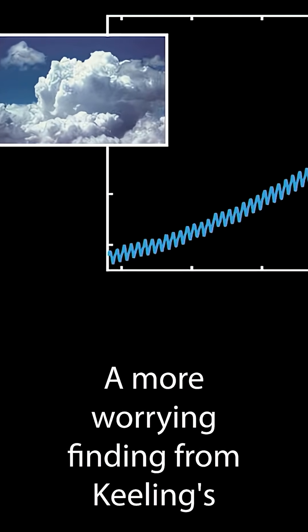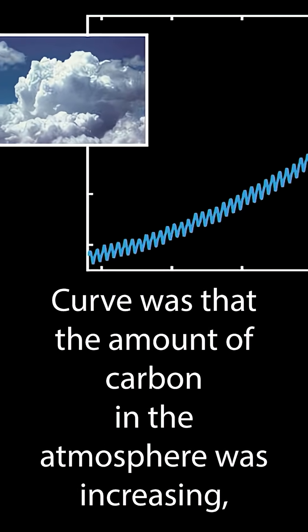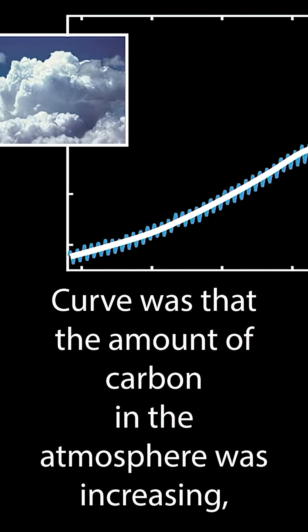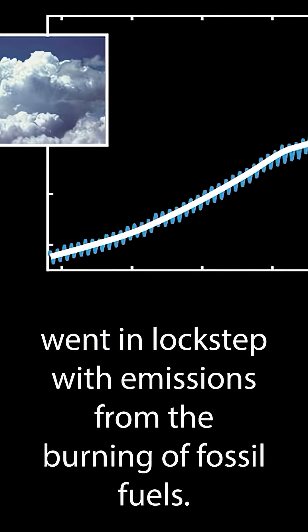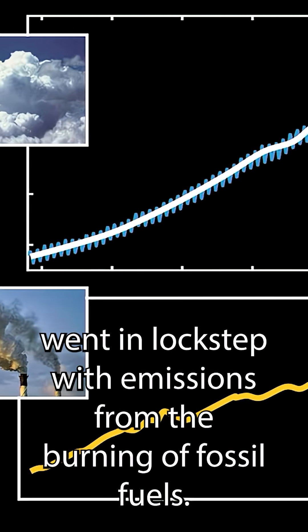A more worrying finding from Keeling's curve was that the amount of carbon in the atmosphere was increasing, and that this increase went in lockstep with emissions from the burning of fossil fuels.